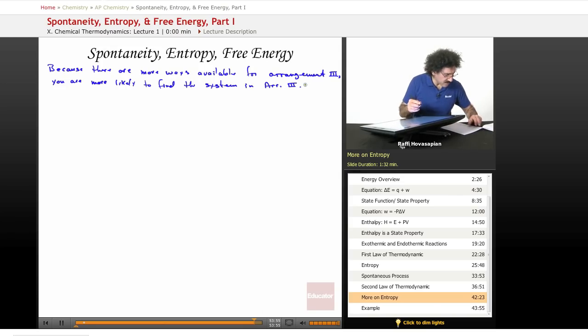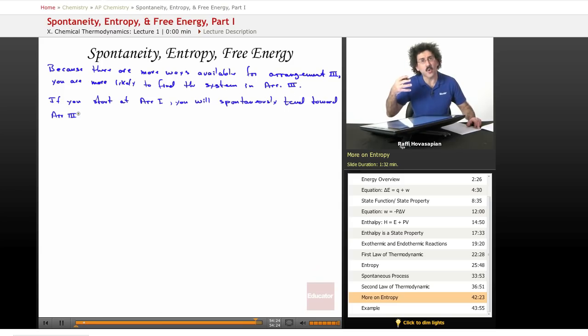If you start at arrangement one, you will spontaneously tend toward arrangement three. Because arrangement three is more chaotic. Arrangement one is highly ordered. Arrangement three is more disordered. There's more movement. There's more freedom of movement with the atoms. Particles can be here and there. There's just more things available to it.